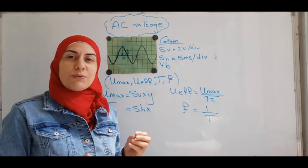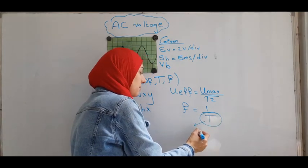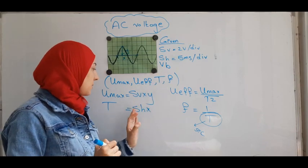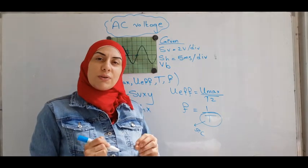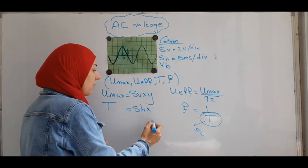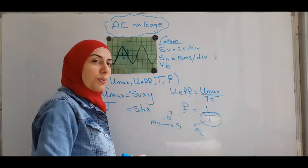Now, pay attention that when you want to find the frequency equal 1 over T, T should be in seconds. So here, for example, you will obtain T in milliseconds because SH is in milliseconds. So you have to convert it to seconds before you find the frequency. And how do you do that? From milliseconds to seconds, you divide by 10 power 3.